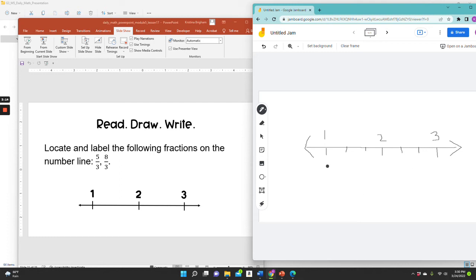I know that one is equivalent to three-thirds, and if I'm going up by one-third each time, I would add one to the numerator. So the next one would be four-thirds. Going up by one-third more, I'd have five-thirds.